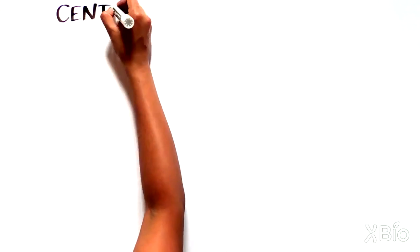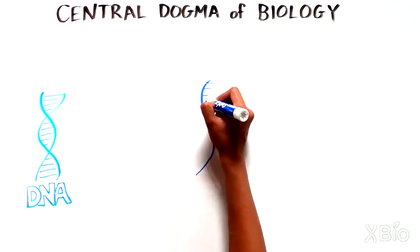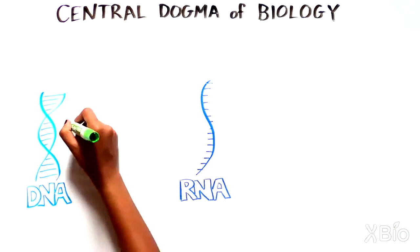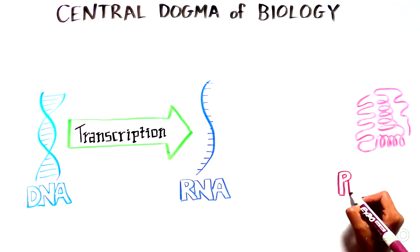Have you ever heard of the central dogma of biology? It's the concept that genetic information stored as DNA gets turned into RNA, a process called transcription, which gets turned into protein.